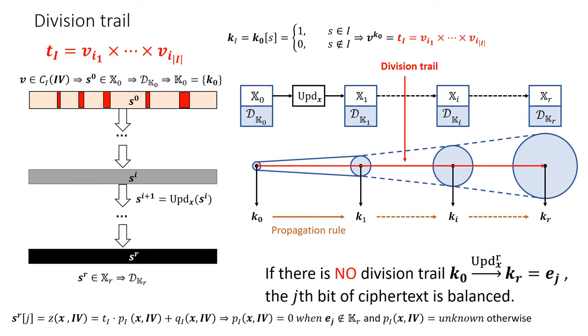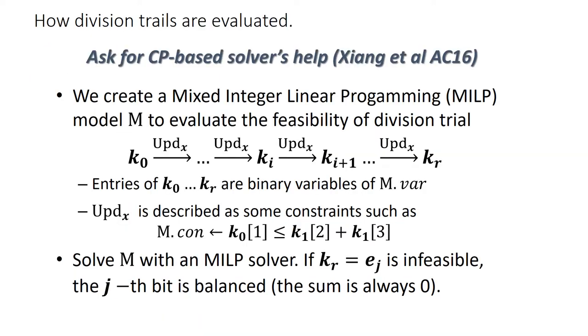With the updating function calls, the multiset transforms from x0 to xr and the division property also propagates from k0 to kr. The k vectors in k0 to kr form a chain referred to as a division trail. If there is no division trail k0 to ej, we know that the jth ciphertext bit has zero-sum property. The feasibility of a division trail is evaluated with the MILP model constructing and solving process. For division trail k0 to kr, each of their entries are regarded as binary variables of an MILP model M. The updating function is described as a set of linear constraints. The final vector kr is intentionally set to ej in order to evaluate the zero-sum property of the jth bit. Then the model M is solved with an MILP model solver like Gurobi. If M is infeasible, the jth bit has zero-sum property.